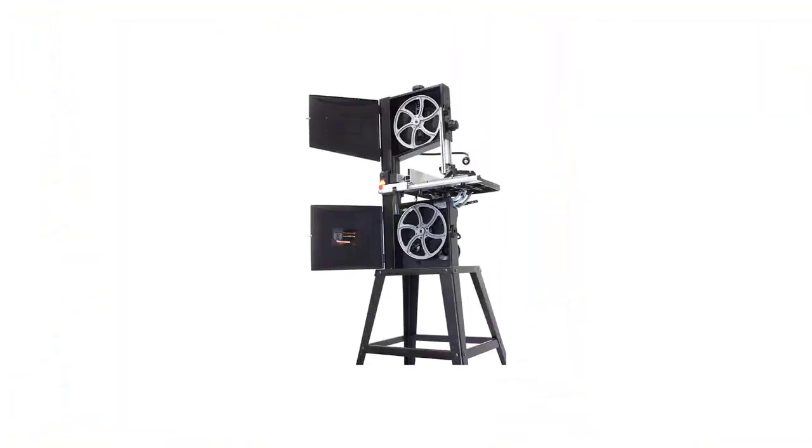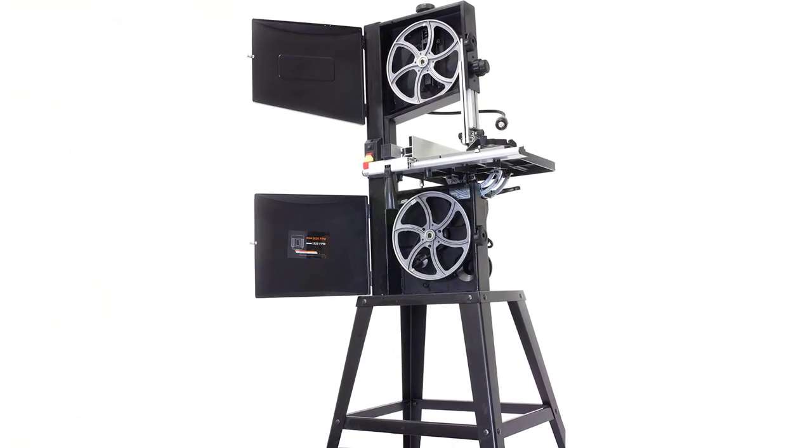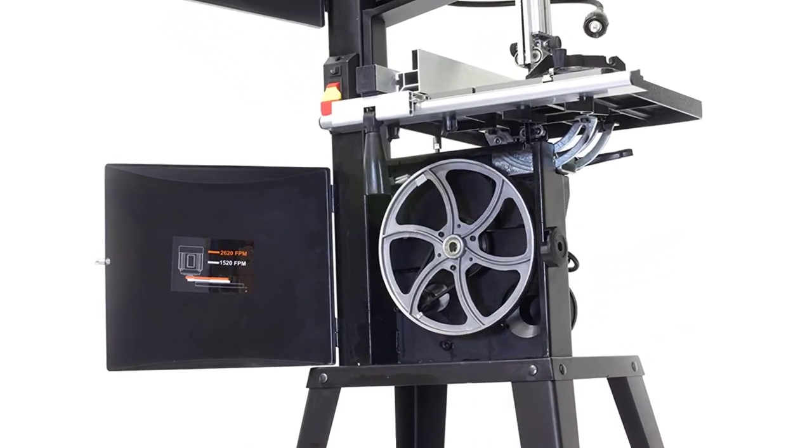Moreover, it comes with convenient features such as a miter gauge and a fence. A 60 TPI 3/8-inch blade already comes with the unit for you to get started.